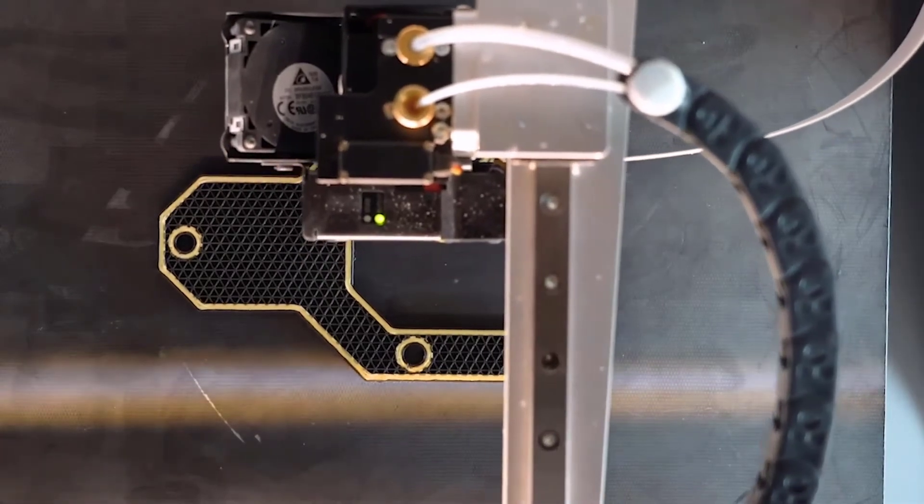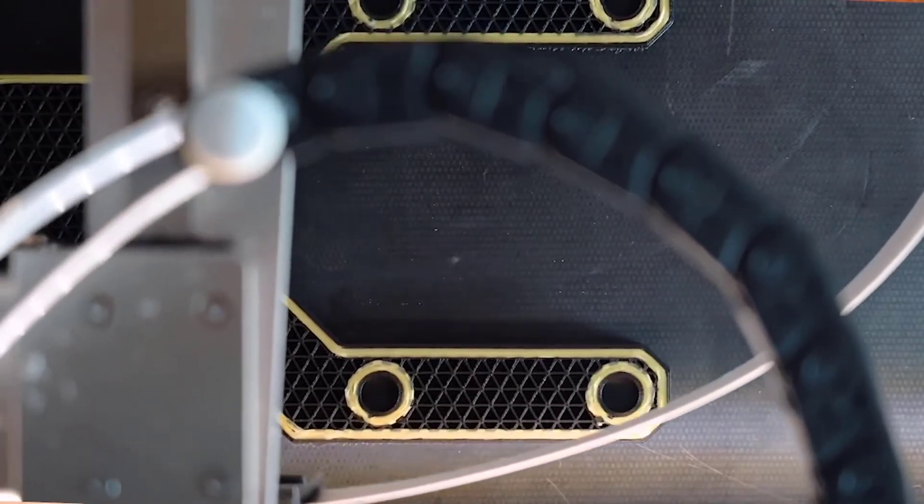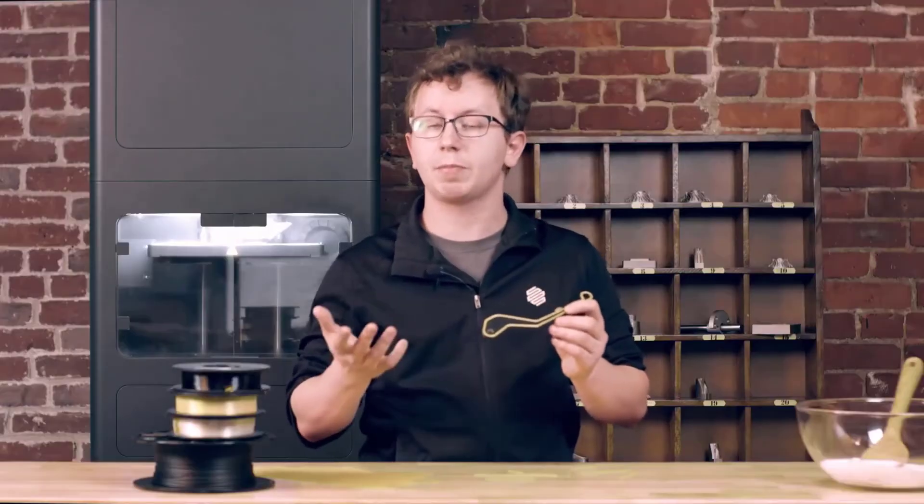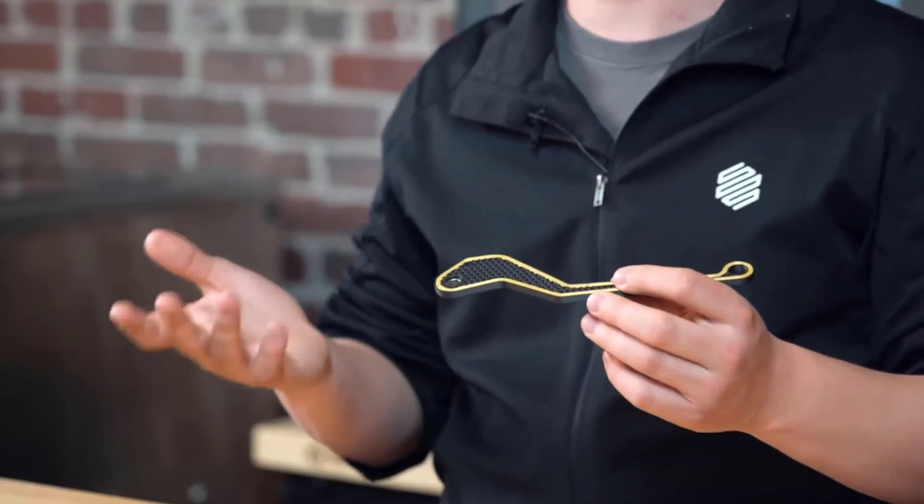Continuous fiber printing is a variant of a deposition-based printing process called continuous fiber fabrication, or CFF. One nozzle builds a thermoplastic matrix material while continuous strands of fiber are ironed down into the part with a second.